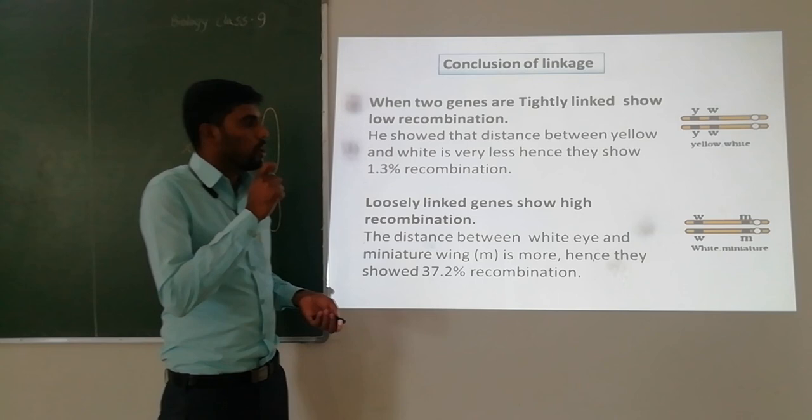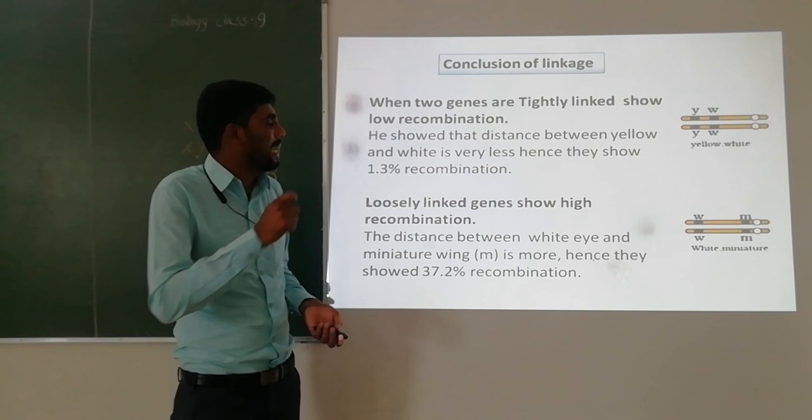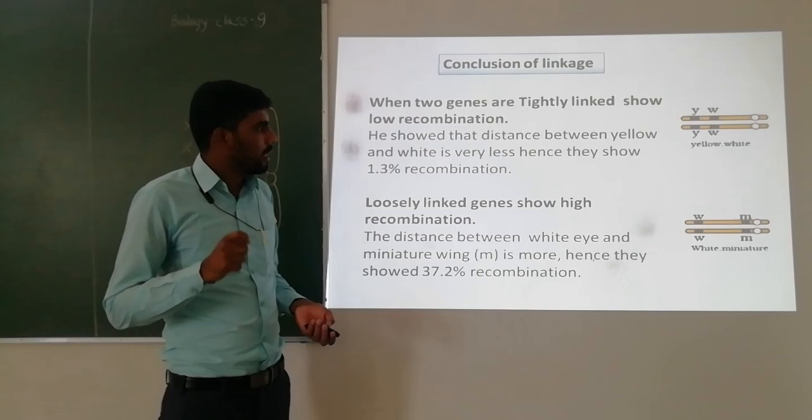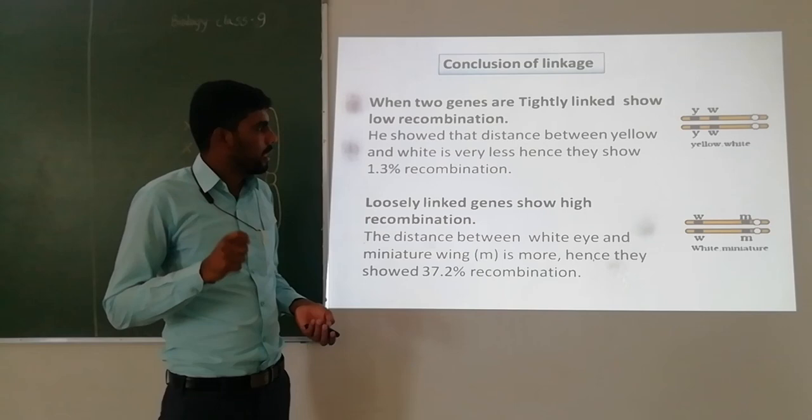Finally, the conclusion: when the two genes are very close to each other, they do not show independent assortment and produce progeny similar to the parents. When the two genes are loosely linked, they show more recombinant type. This is the complete conclusion of linkage. Thank you so much.